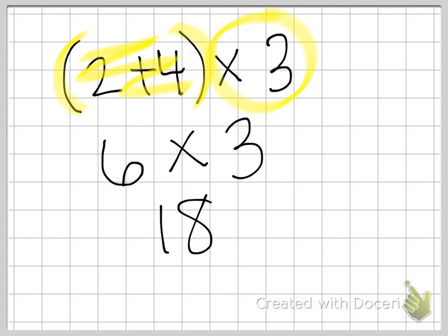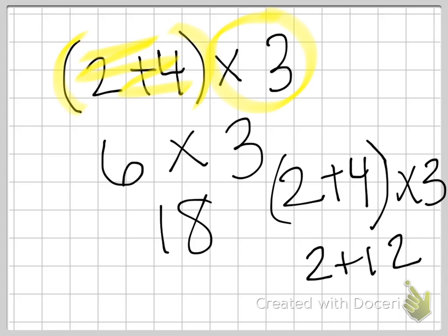If you were to have done it differently, you would have gotten a completely different answer. Let's do it again, 2 plus 4 times 3. If you would have done 4 times 3 first, you would have gotten 12 plus 2 is 14. Those are completely different answers. So you really just have to practice. Like I said, this is called the order of operations. So order matters.